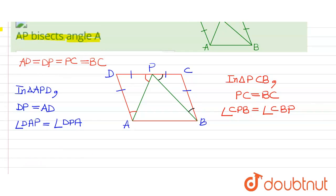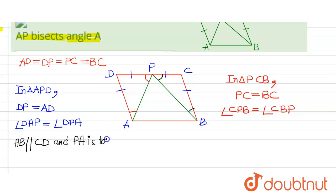Since AB is parallel to CD and PA is a transversal, that implies angle DPA should be equals to angle PAB.